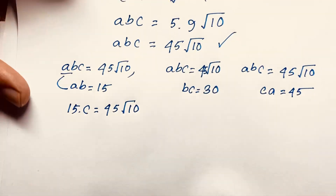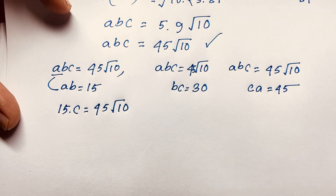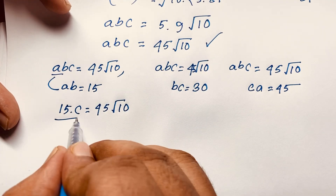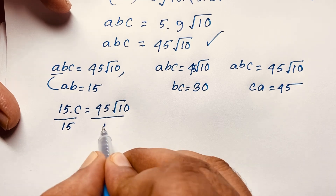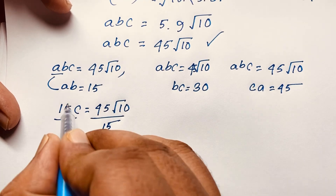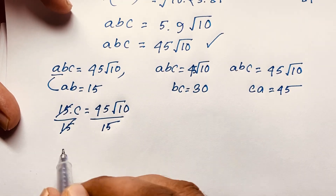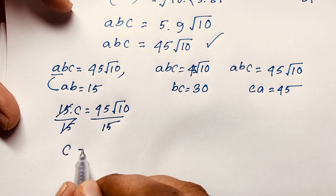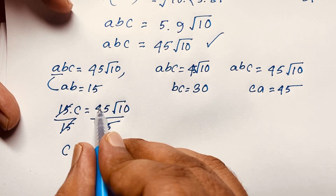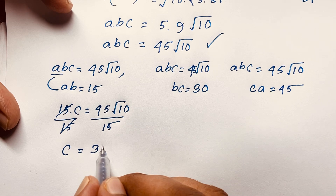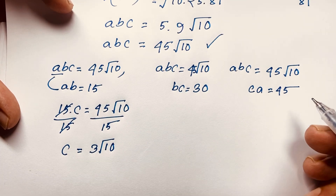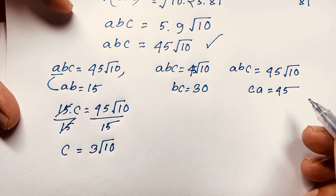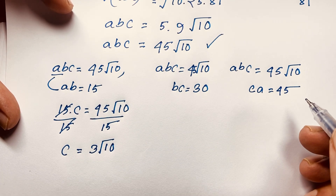Dividing both sides by 15, the 15s cancel, and 45 divided by 15 gives 3. So c = 3√10.